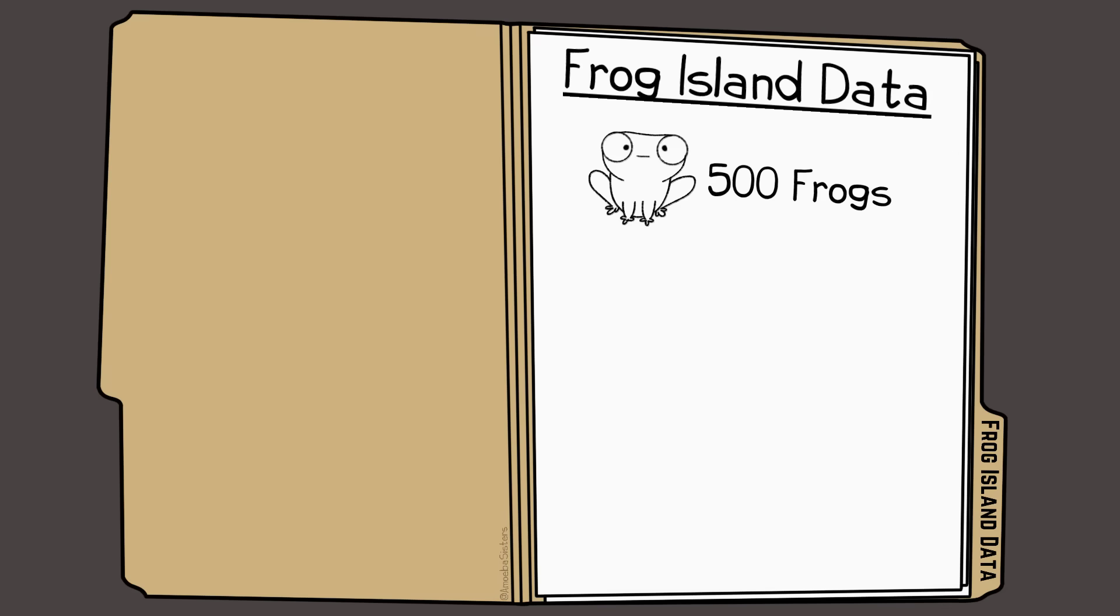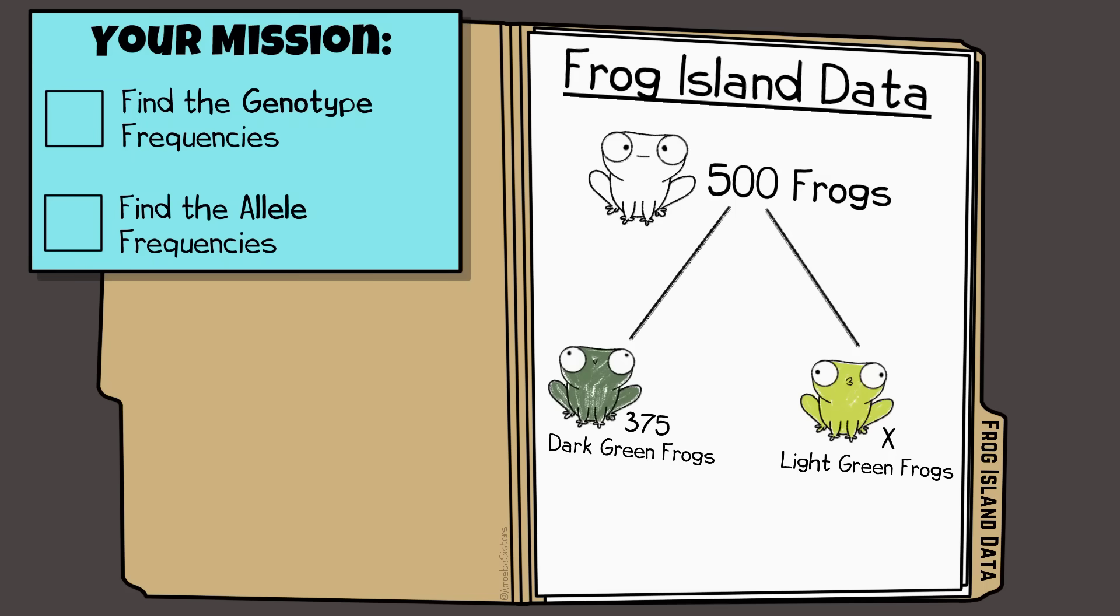So here's the information you get for this new population. There are 500 frogs, and of those, 375 frogs are dark green. The rest are light green. With that information, please solve all genotype frequencies and all allele frequencies if in Hardy-Weinberg equilibrium.